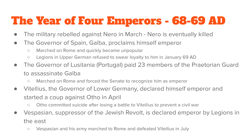When Vitellius took over the government, there was yet one more challenge. The hero of the Holy Land, Vespasian — who defeated the Jewish revolt — was declared emperor by his troops. Vespasian's troops brought him to Rome, where he defeated Vitellius and gained control of the government. This is called the Year of Four Emperors because four different emperors took over after Nero in less than one year's time.